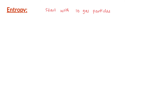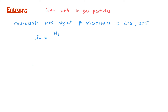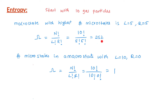Let us see what happens with 10 gas particles. The arrangement with the highest number of microstates would be 5 on the left and 5 on the right. Using the formula N! / (L! × R!), with N=10, L=5, R=5, we get 252. This macrostate is 252 times more likely than the arrangement with all gas particles on one side. As the total number of gas particles increases, the likelihood of achieving a 50-50 arrangement increases dramatically.